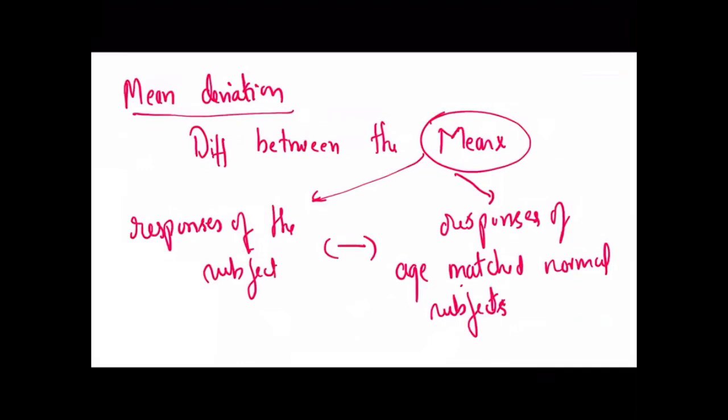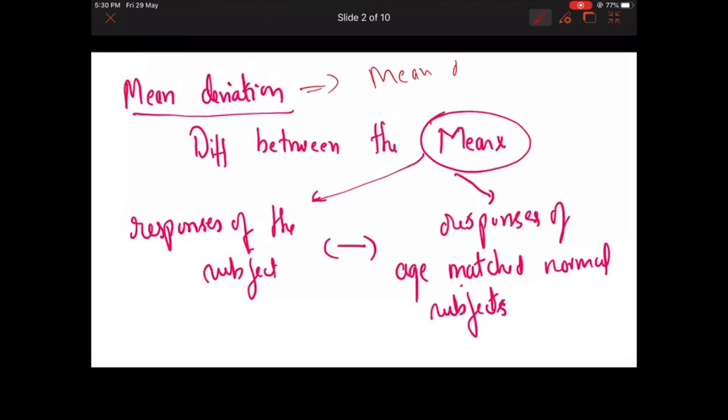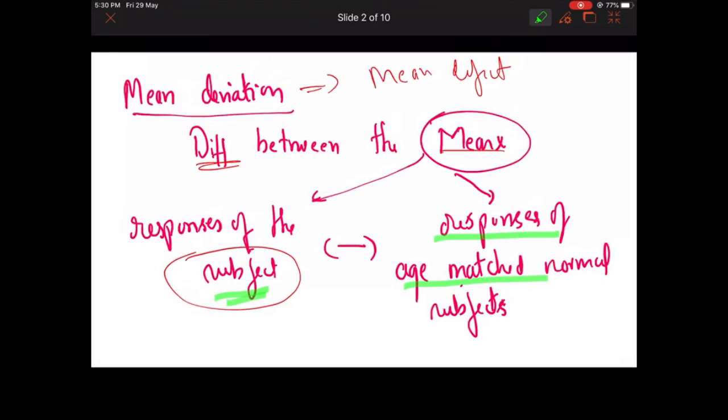What is mean deviation? According to Becker-Schaefer, mean deviation — also known as mean defect — is the difference between the mean of the responses of the subject and the mean of the responses of age-matched normal subjects. Age-matched normal data is already stored in the computer, and the difference between the two means is called mean deviation.